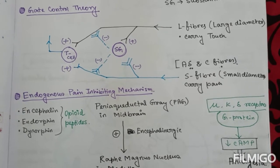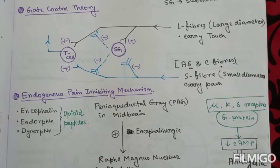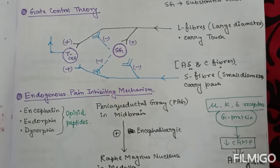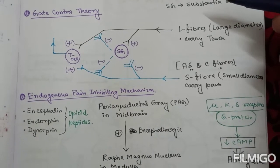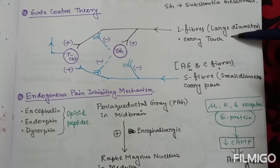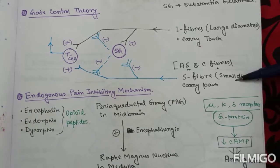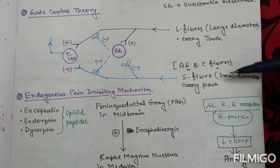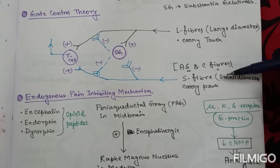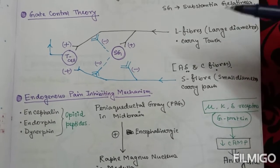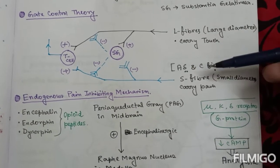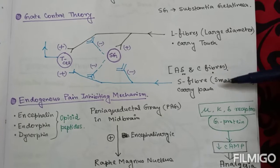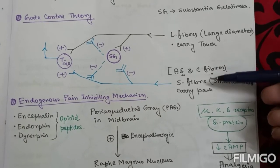The first theory is gate control theory. According to this theory, the large diameter afferents carry touch fibers, and the small diameter afferents — that is S fiber, or A-delta and C fibers — carry pain sensation. A-delta is for fast pain and C is for slow pain.